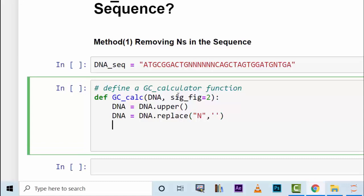Now you can do the GC calculation. Basically you say GC equals DNA.count G plus DNA.count C. This is divided by the length of your DNA.